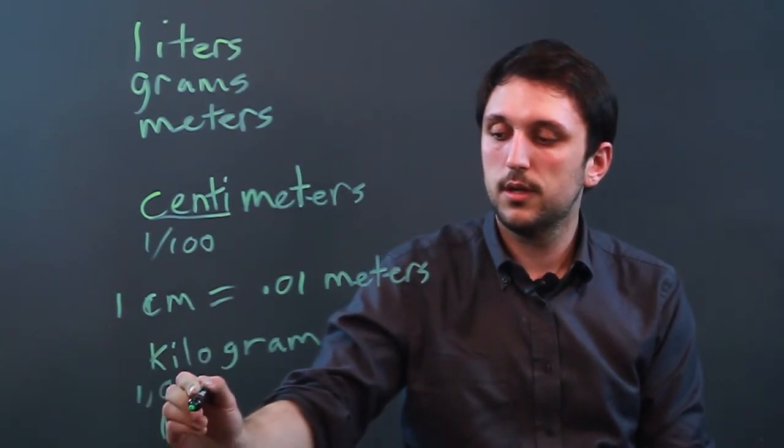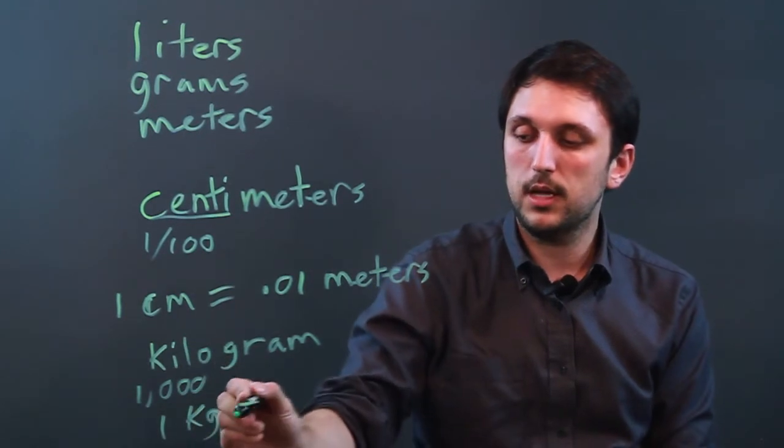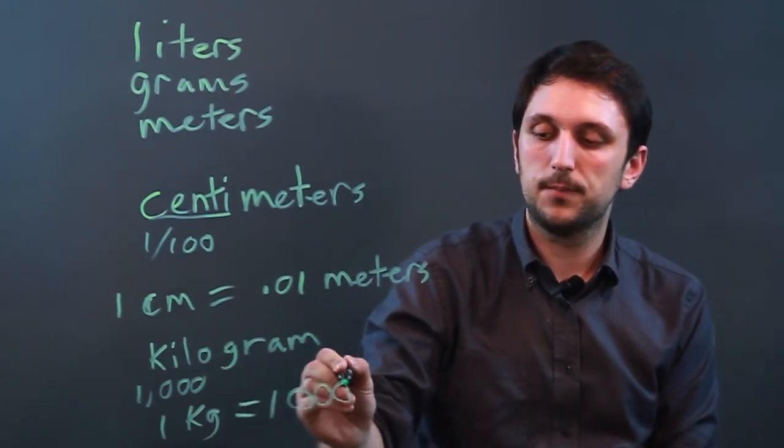So one kg, the abbreviation for kilogram, equals 1,000 grams.